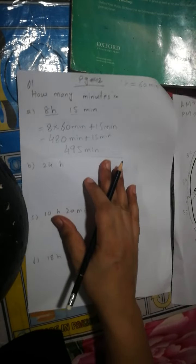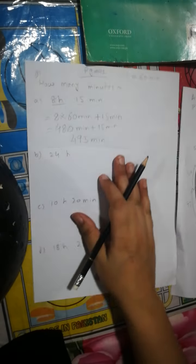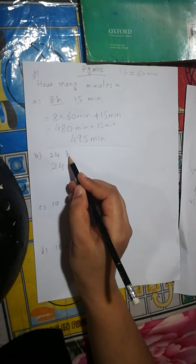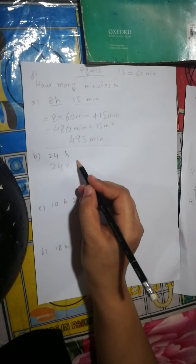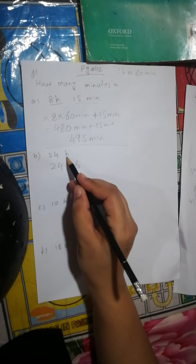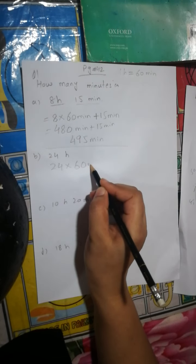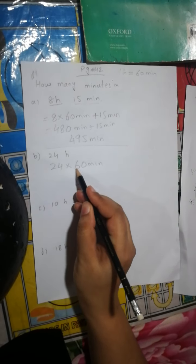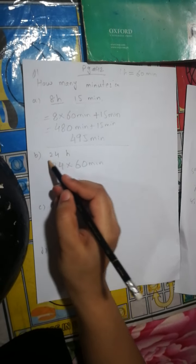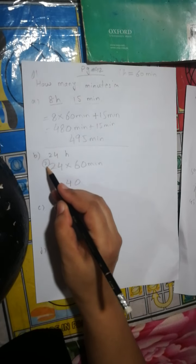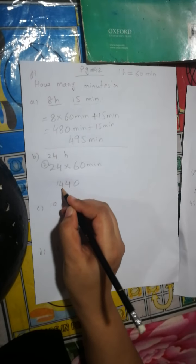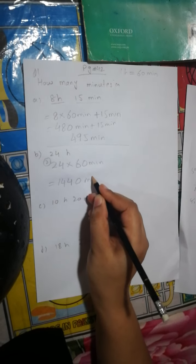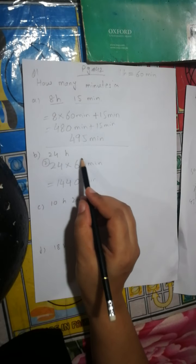Next: 24 hours means 24 multiply 60. At the place of hour you write 60 minutes. Multiply 24 with 60: 4 times 6 is 24, write 4 and carry 2; 2 times 6 is 12 plus 2 is 14. If you can't do it horizontally or mentally, you can do it vertically.